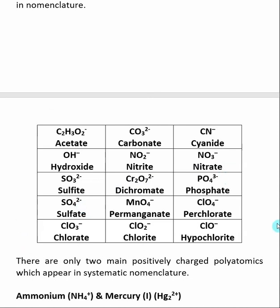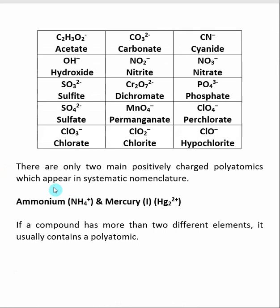Notice all of these polyatomics are negatively charged. For us, there are really only two positively charged polyatomics — though once again, you'll need to check, as there might be some you're expected to know. The two are ammonium, NH4+, and mercury 1, which is Hg2 2+. Each mercury inside of this polyatomic has a plus 1 charge, so it is named mercury 1.